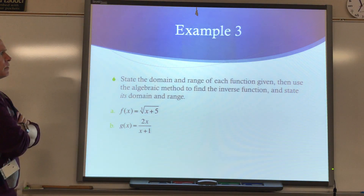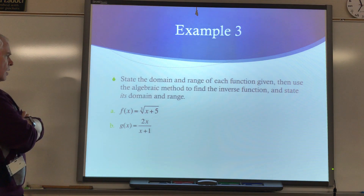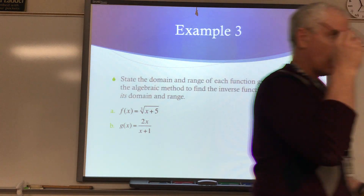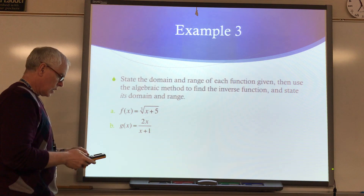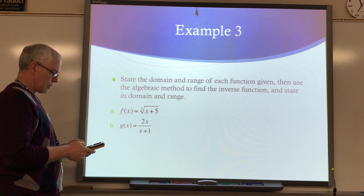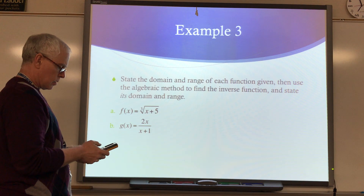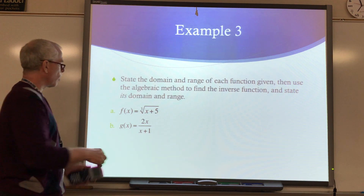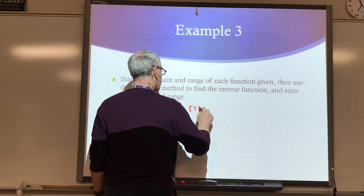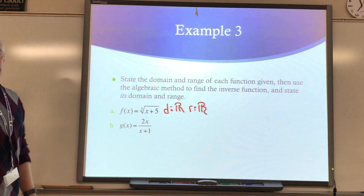State the domain and range of each function given, then use the algebraic method to find the inverse and state its domain and range. Grab your calculator here. For the cube root function, since I'm taking a cubed root, my domain should be all real numbers. If I graph the cubed root of X plus 5, it looks like the domain and range are both all real numbers. And since the domain and range interchange, the domain and range of the inverse are also going to be all real numbers.